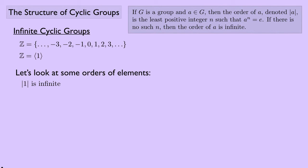The order of 1 is infinite. In additive notation, instead of powers we consider multiples: 1+1=2, +1=3, +1=4, +1=5, +1=6, +1=7 — we keep adding 1 and it never reaches the identity, so the order of 1 is infinite.